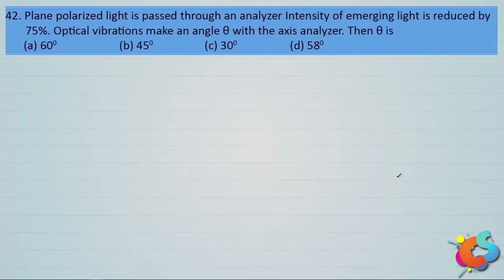Next question: Plane polarized light is passed through an analyzer. The intensity of the emerging light is reduced by 75%. Optical vibrations make an angle theta with the analyzer. Then theta is: options A 60°, B 45°, C 30°, and D 58°.